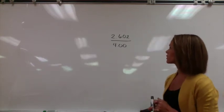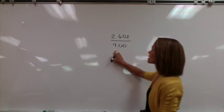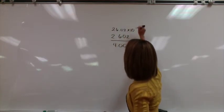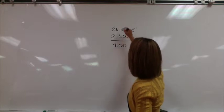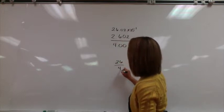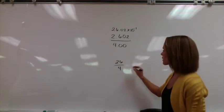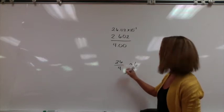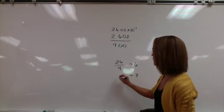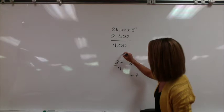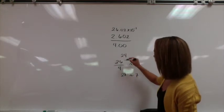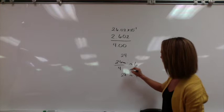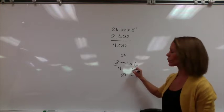First we have 2.602 divided by 4. The best way to approach this is to turn it into scientific notation. So I would use 26.02 times 10 to the negative first, divided by 4. I'm just going to look at 26 divided by 4 for the moment. I know that 4 times 6 is 24, so my answer is roughly 6-ish. But I also know that 4 times 7 is going to give me 28, so that's roughly 7-ish.